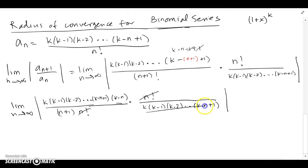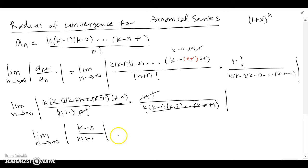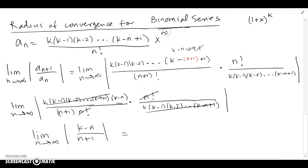After cancellations, I'm left with (k minus n) over (n plus 1). But I just realized I forgot the x^n — the nth term had an x^n that I dropped. Let me go fix that and put it back in.